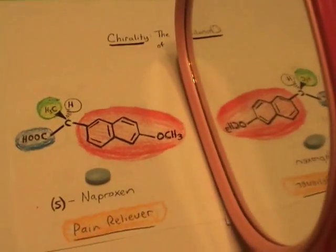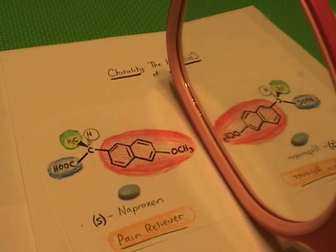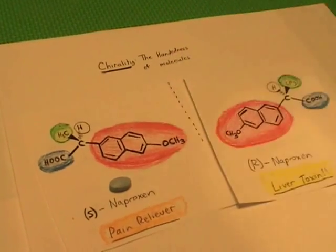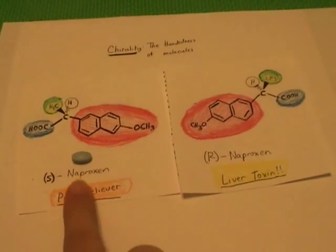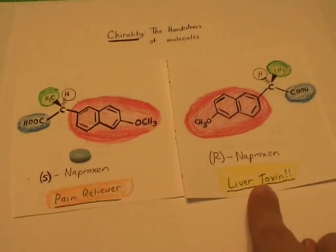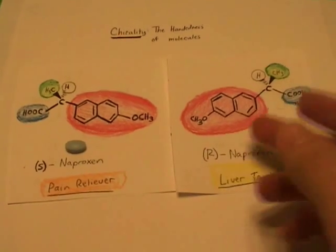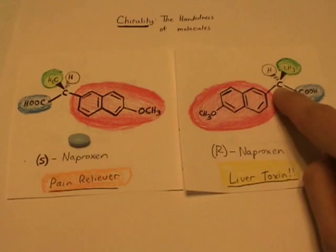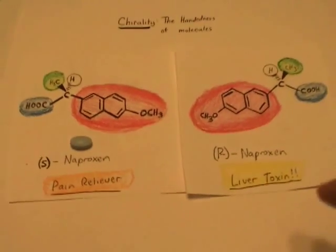I'm going to take the mirror and make a mirror image of S-naproxen. I've kept the methyl group towards me and the hydrogen going back away from me into the board, and I've switched the red and the blue. And we see this is the mirror image of S-naproxen. S-naproxen is a pain reliever. R-naproxen is reported as a liver toxin. They have the exact same molecular formula and the same bond-to-bond connectivity. The difference is the arrangement of the atoms and groups in space around that central carbon stereocenter. We call it a stereocenter because there are four different groups around that carbon.